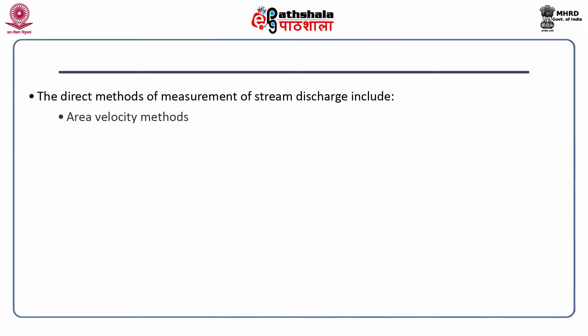We will discuss the area velocity method. When we talk in terms of discharge, it is the area multiplied by velocity — because discharge is in cubic meters per second, where area is the cross-sectional area of the stream and velocity is measured in meters per second, or sometimes centimeters per second.